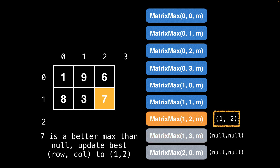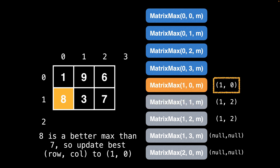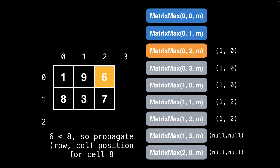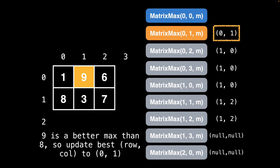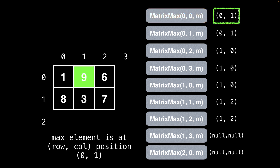Since seven is a better max value than null, update the best row-column position to one, two. Next, three is less than seven, so we propagate the row-column position for cell seven. Now eight is a better maximum value than seven, so update the best row-column position to cell one, zero. If the cell is empty, propagate the best known answer. Since six is less than eight, also propagate the best known answer. Now nine is greater than eight, so we update the best row-column position to cell nine, which is zero, one. One is less than nine, so propagate the best known row-column position. In the end, we get the maximum element at row-column position zero, one, corresponding to cell nine.